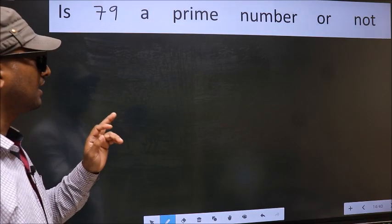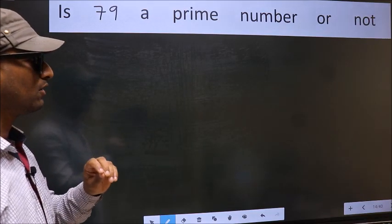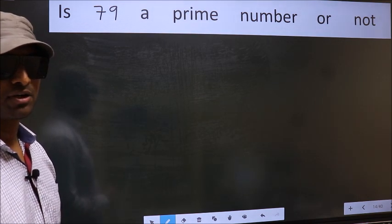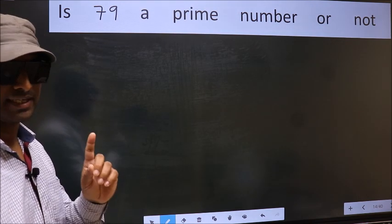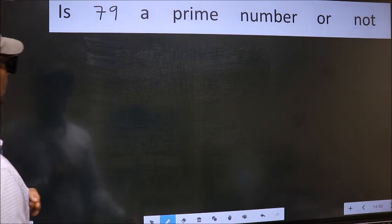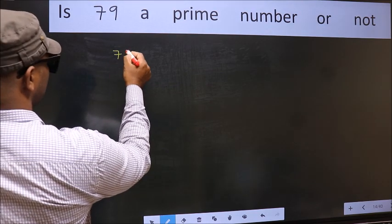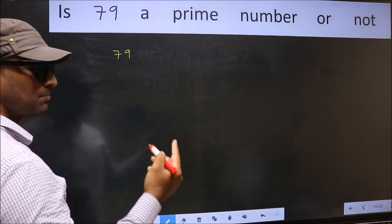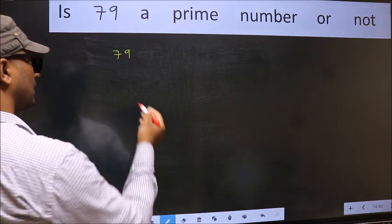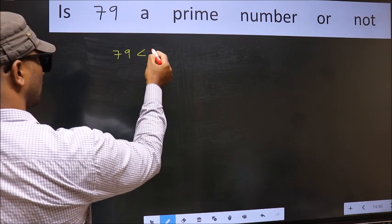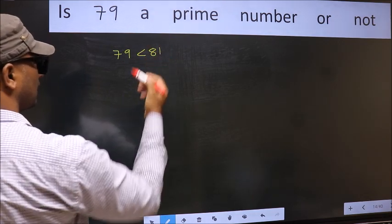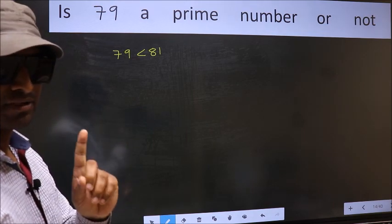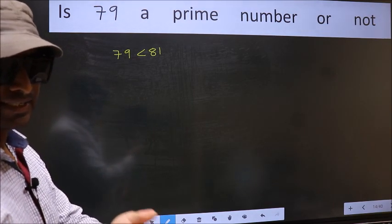Is 79 a prime number or not? To check whether 79 is prime or not, step 1: the given number is 79. This is close to which perfect square number? This is close to 81, a perfect square number. This is your step 1.